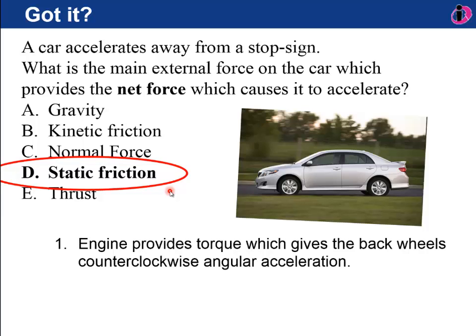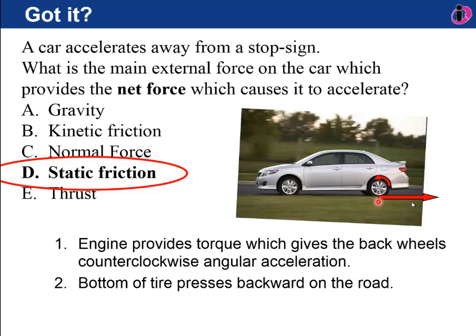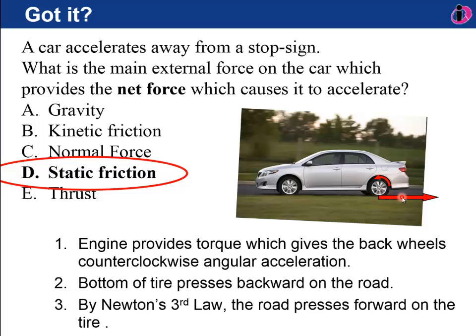So the steps here for your car is that the engine first provides a torque, which in this car here is giving a counterclockwise angular acceleration to this back wheel. That's a rear-wheel drive car. Step two is that the bottom of the tire is pressing backwards against the road, and that's a static friction force, and then there's an equal and opposite static friction force on the road on the tire acting forwards, and it's this force right here, which is almost all of the net force that's acting on the car to get it going away from a stop sign.